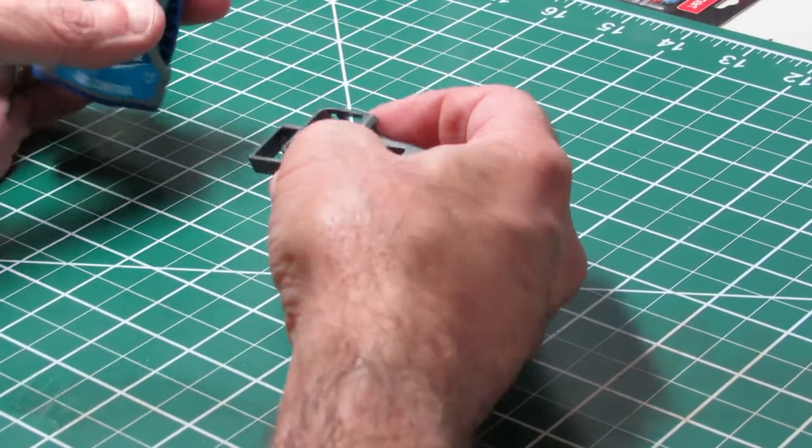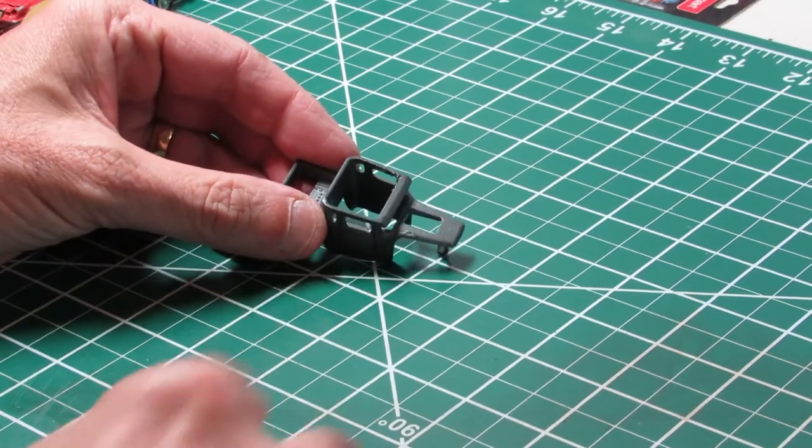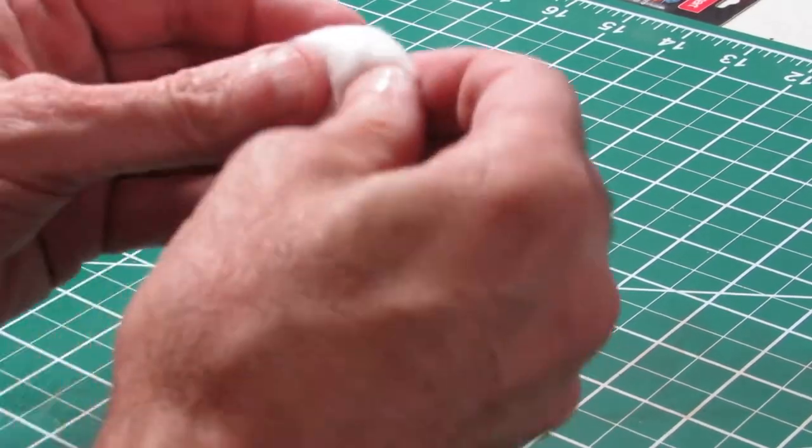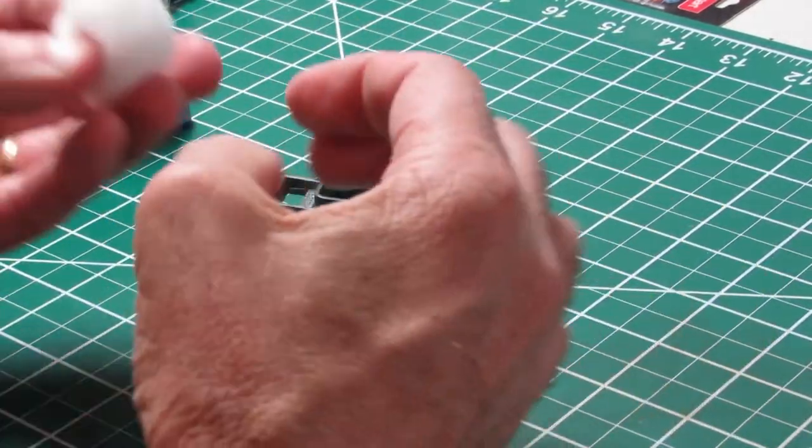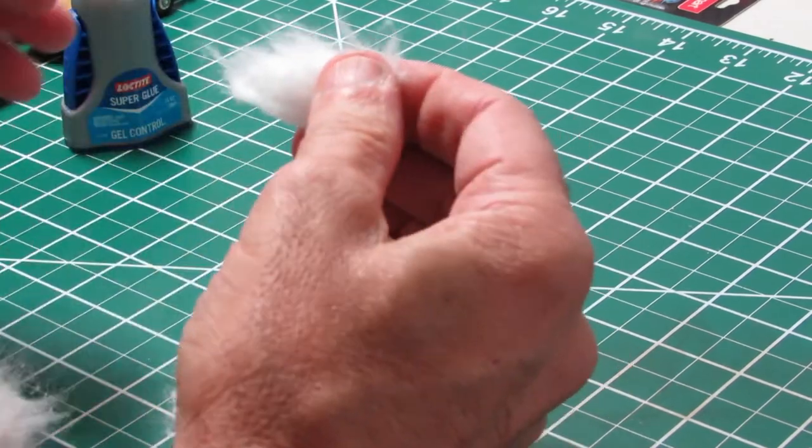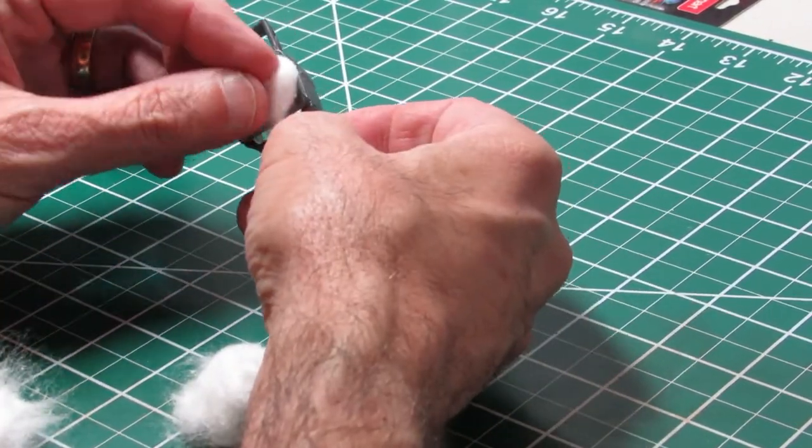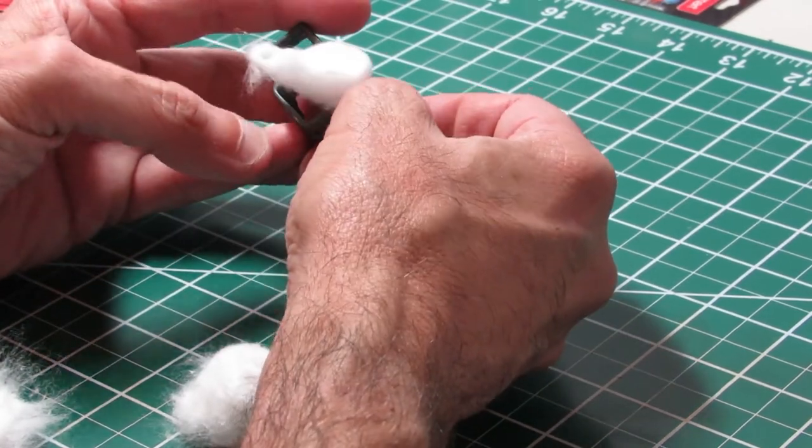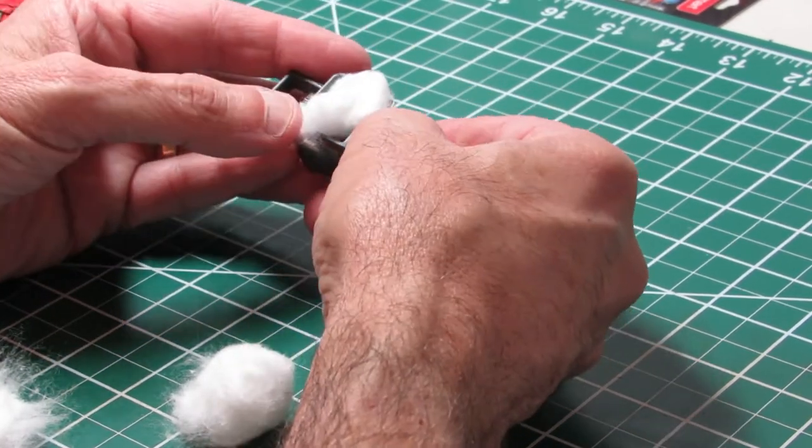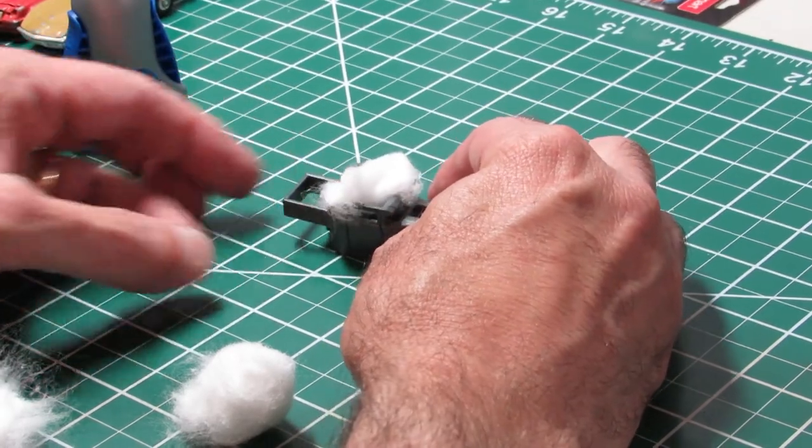And this is the part you're not going to believe. I took cotton and thought okay well cotton can simulate webs. So I'll use the CA and attach the cotton. Let it dry.